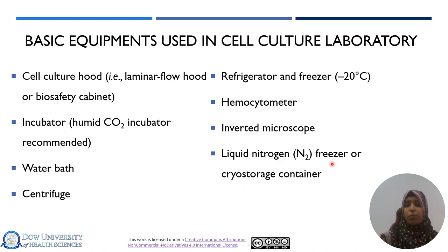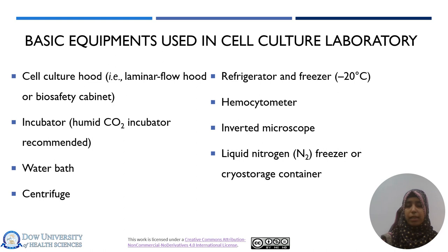We also need proper liquid nitrogen freezers or cryo storage containers, because you need to store your cells at different passage numbers as backup storage. You cannot keep cells growing all the time, and when you need those cells after 2, 3, or 6 months, you need to store them under cryogenic conditions. Liquid nitrogen freezers or cryogenic containers are ideal for this purpose.